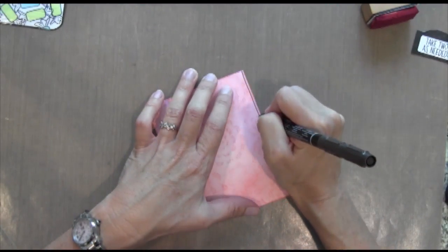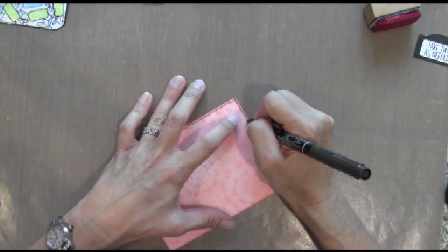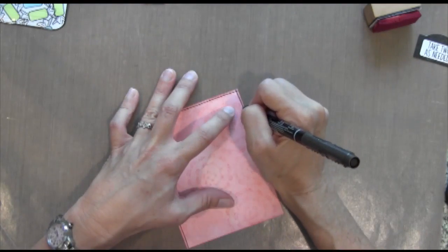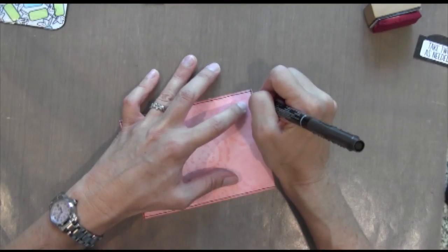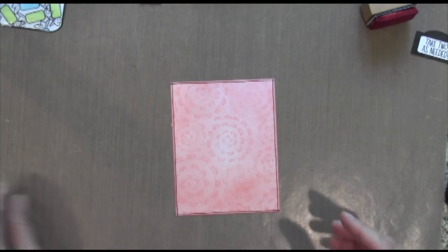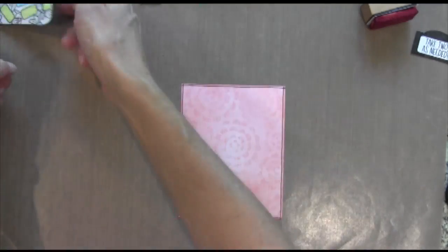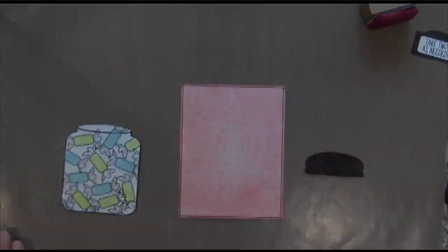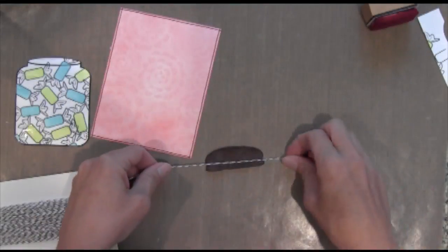And next I'm going to take a Stampin' Up Marker Early Espresso and I'm just going to freehand a line down. Just kind of hold your breath as you go down. And it doesn't have to be perfect. That's kind of the point of it. Okay, so I'm just going to let those pieces dry for a little bit and come back.